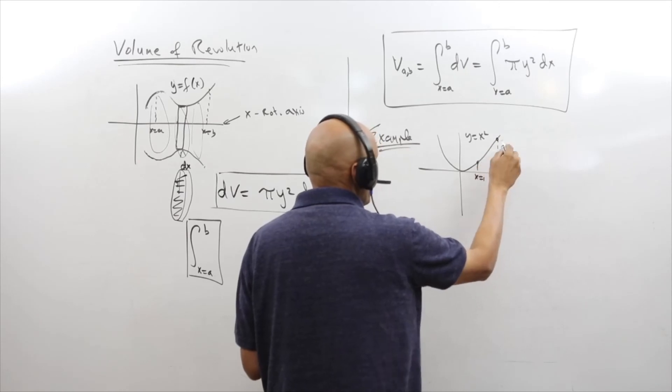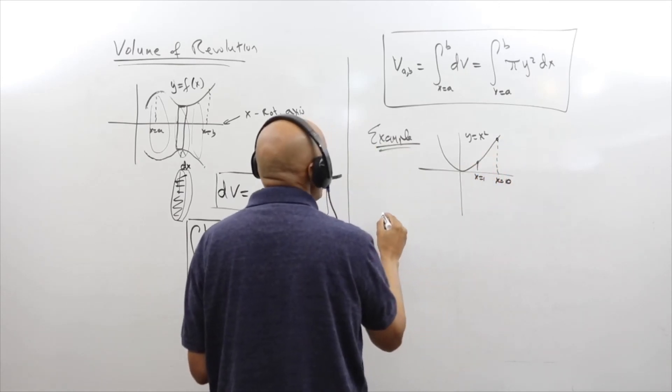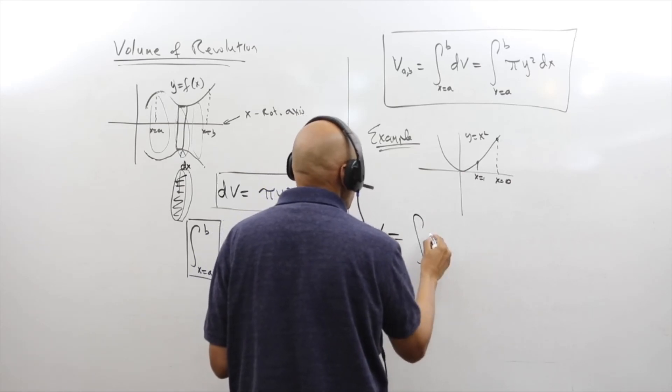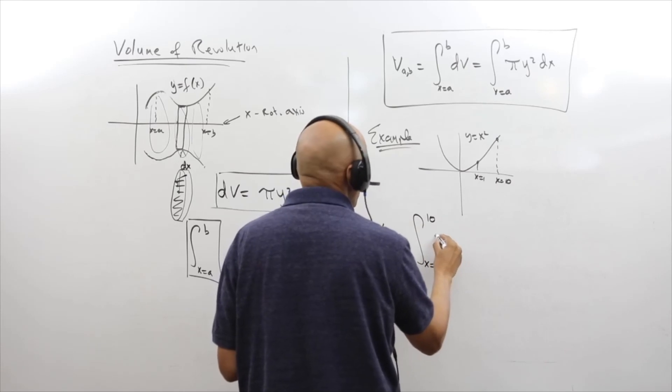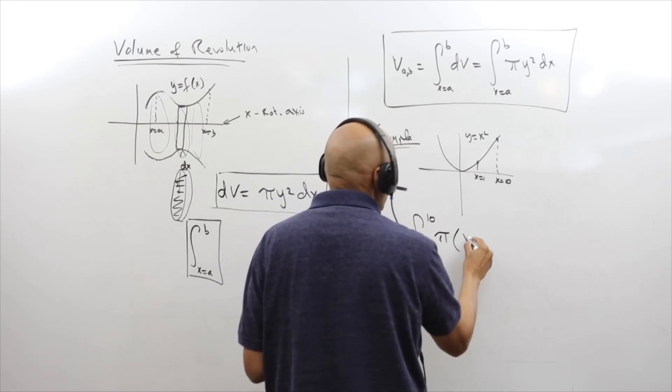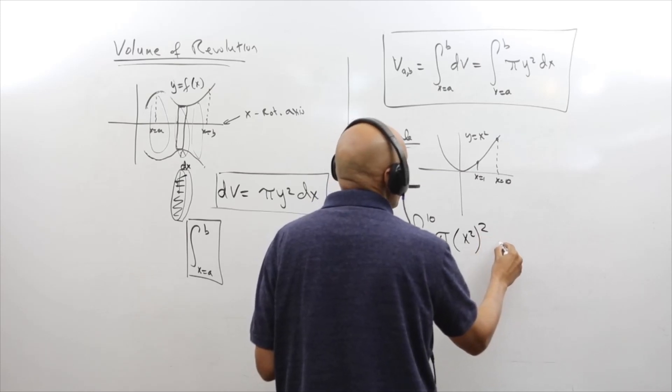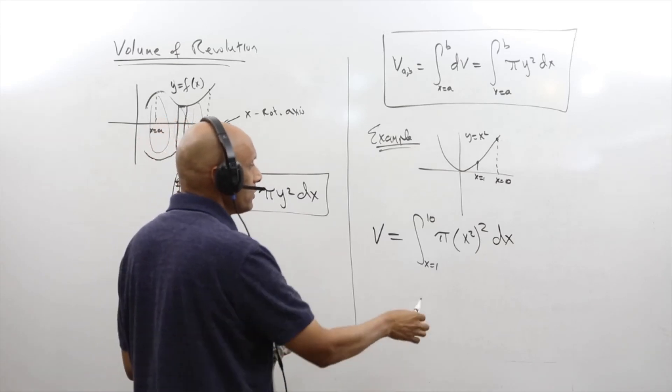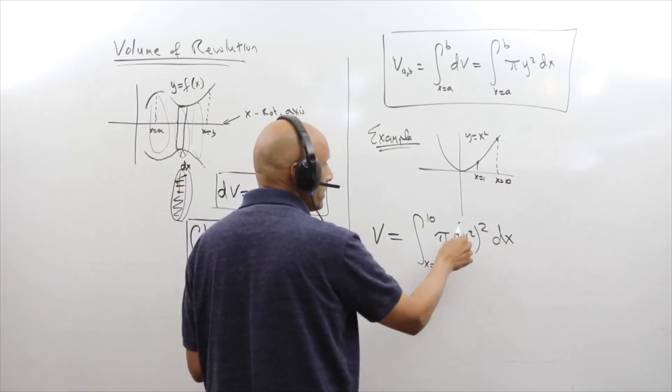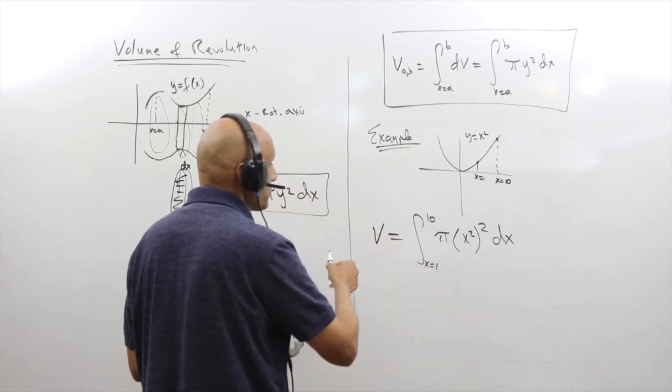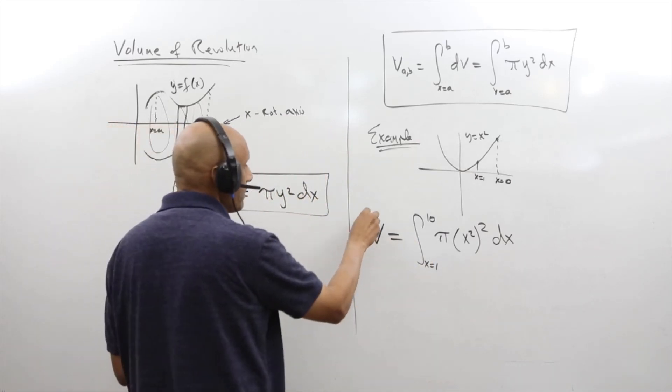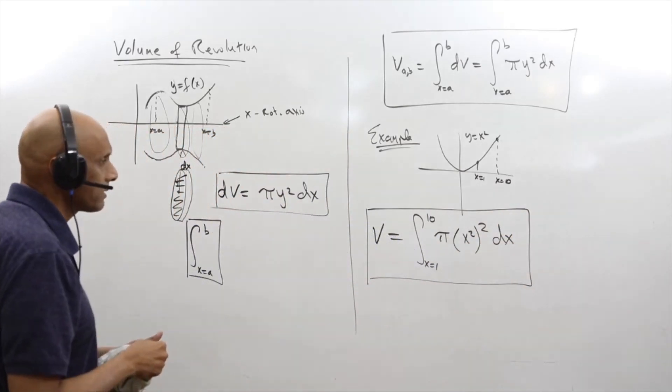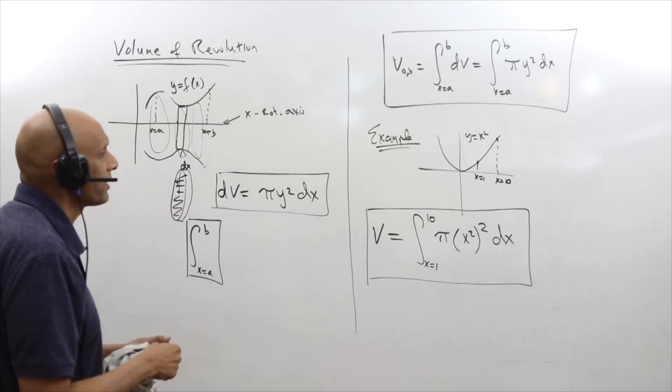So what is the volume? The equation says volume is equal to the integral taken from x equals 1 to 10 of π y², which is x² squared, and dx. So I've set up the integral. This is a very easy integral to evaluate. We pull out the π, you get x to the fourth, so it'll be 1/5 x to the fifth taking limits 1 to 10. That's not really important—basically setting up the integral volume equation is very important. So this is the disk method for finding the volume of a curve, and here's an example.